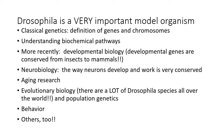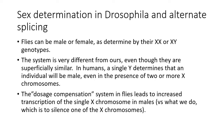Drosophila is very popular for neurobiology, especially because the way neurons work and develop is a very conserved process and can be very informative of what happens in other organisms. Also popular in aging, evolutionary biology, behavior, and so on. What we're going to talk about is sex determination in Drosophila, which superficially looks like what we do in mammals, but the mechanisms involved are totally different.